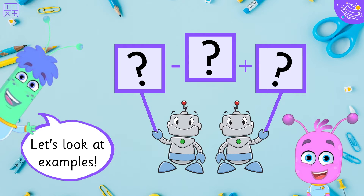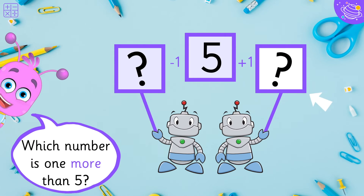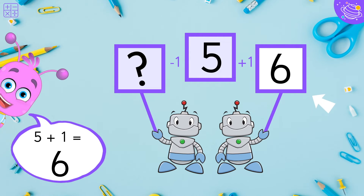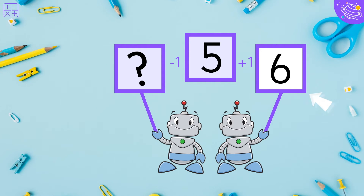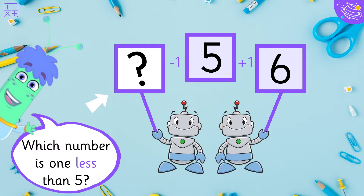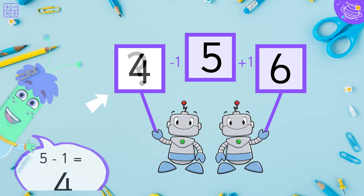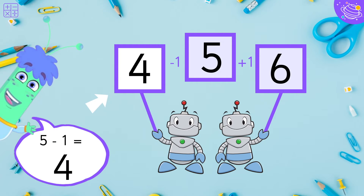Let's look at examples. Which number is one more than five? Five plus one equals six. Which number is one less than five? Five minus one is four.